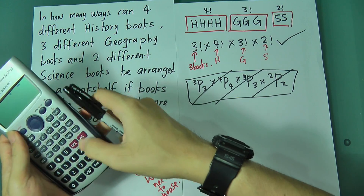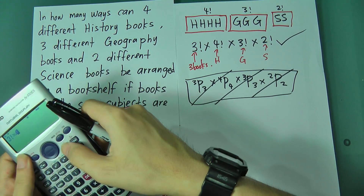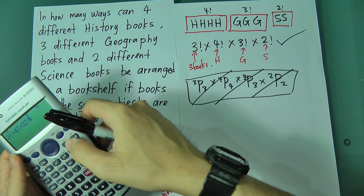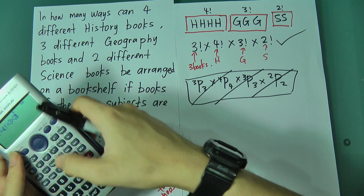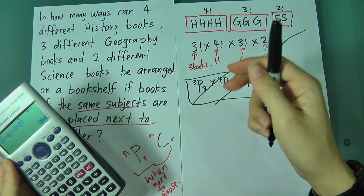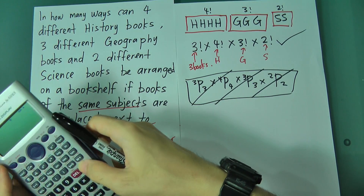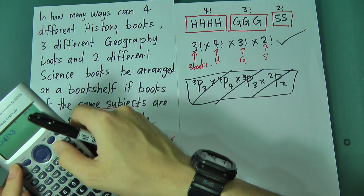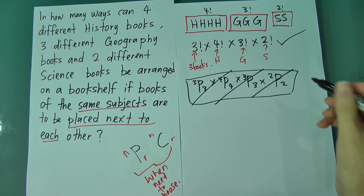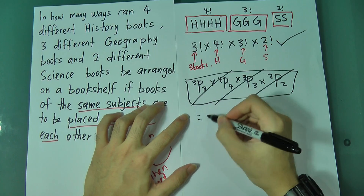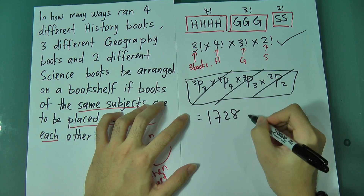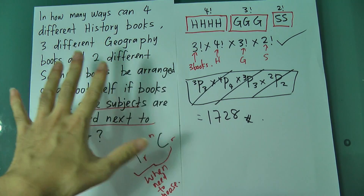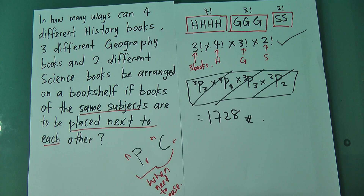Let me press the calculator: 3 factorial × 4 factorial × 3 factorial × 2 factorial. The answer I got is 1728. I hope this video helps you understand this type of famous question in permutation and combination. Thanks for watching!